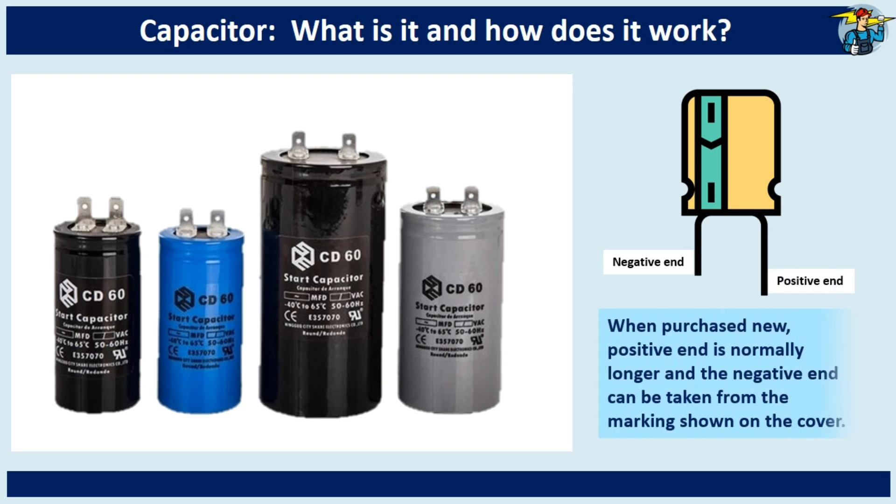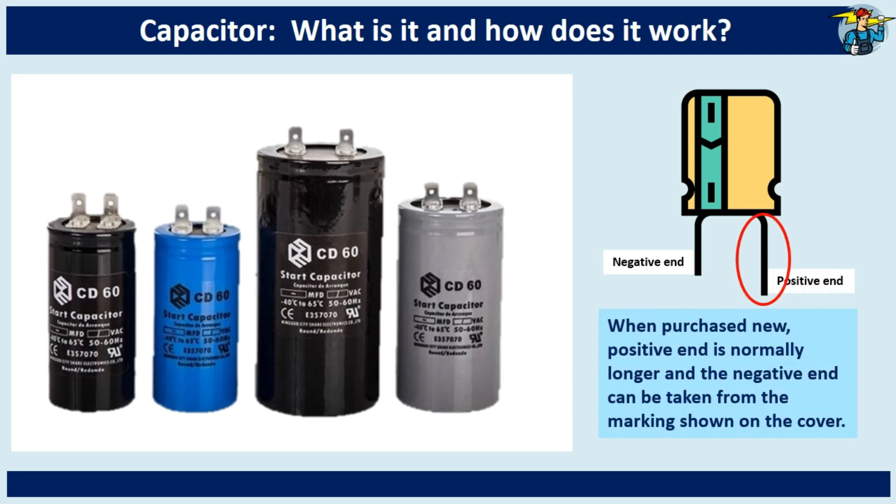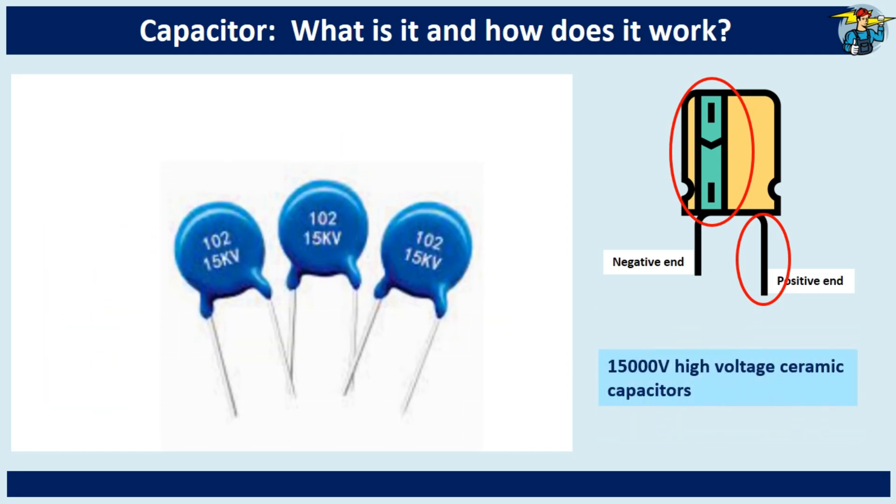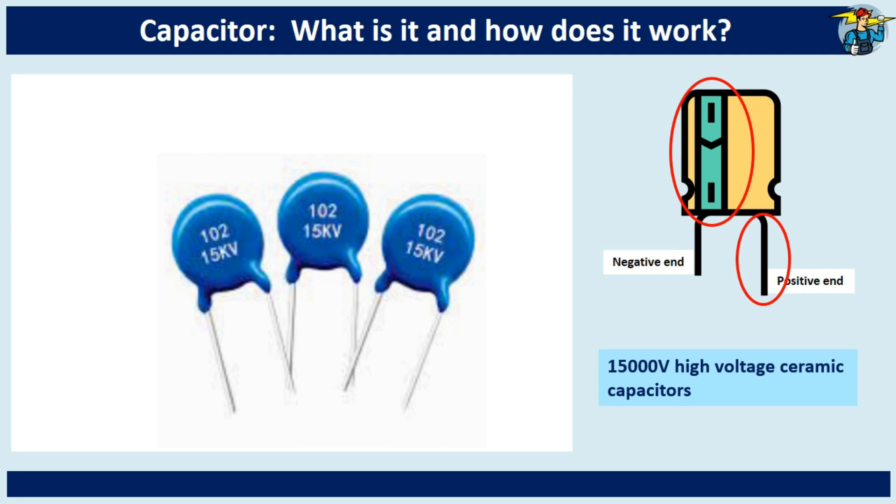When purchased new, the plus end is the longer terminal, and the minus end is usually marked on the cover. Shown here are high-voltage ceramic capacitors with 15,000 volts.